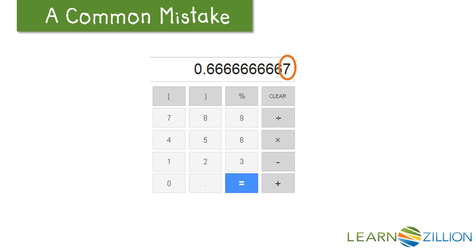And students will think that that 7 is where the number stopped, and that's not the case. The number keeps repeating. The calculator has stopped because it ran out of spaces and rounded the number up to 7.